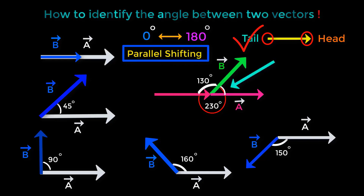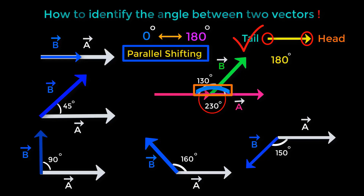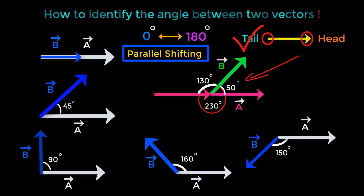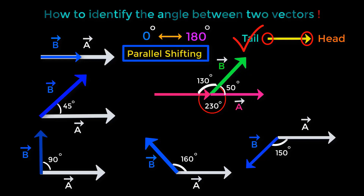This is the angle that we are looking for. This is a 180-degree angle. If we subtract this angle from 180 degrees, we get 180 degrees minus 130 degrees, which equals 50 degrees. This 50 degrees is the angle between these two vectors.